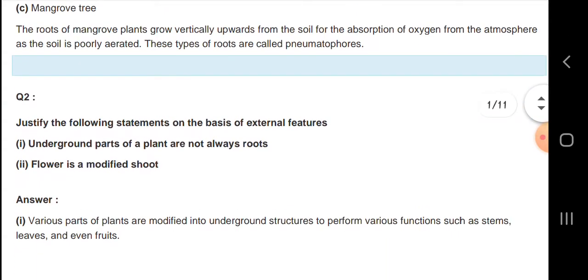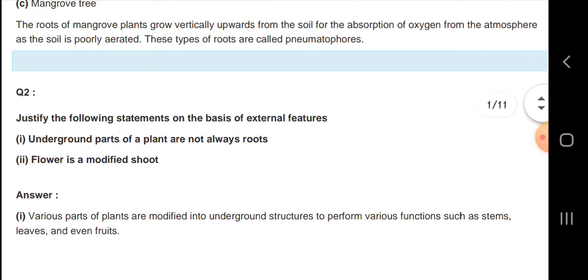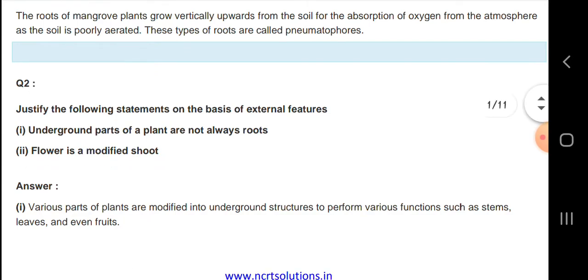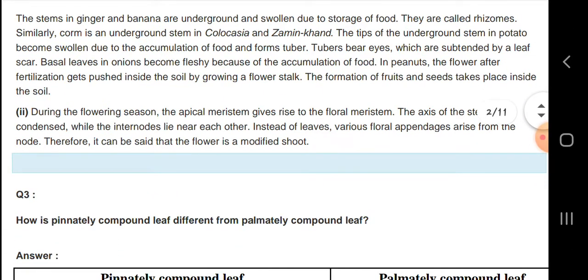On the basis of external features, underground parts of the plants are modified. Various parts of the plants are modified in the underground structure to perform various functions like the stems, leaves and even roots. These stems in ginger and banana are underground and store or produce food.